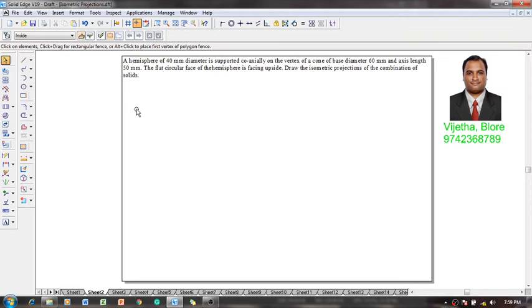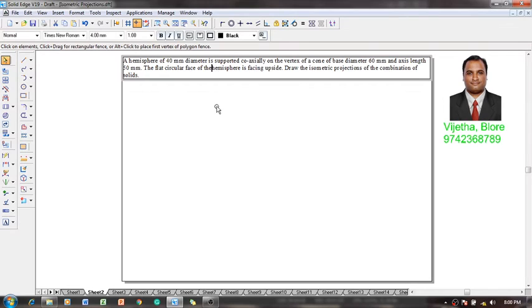on the vertex of a cone of base diameter 60 millimeter and axis length 50 millimeter. The flat circular face of the hemisphere is facing upside. Draw the isometric projections of the combination of the solids.